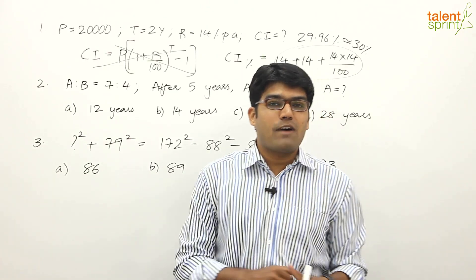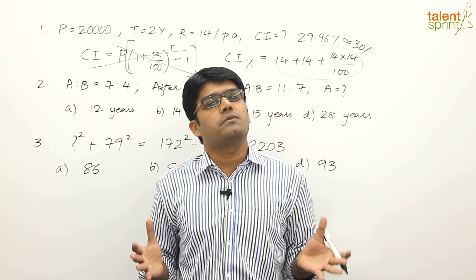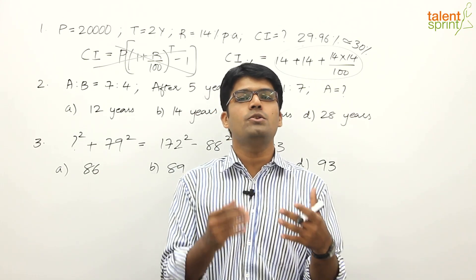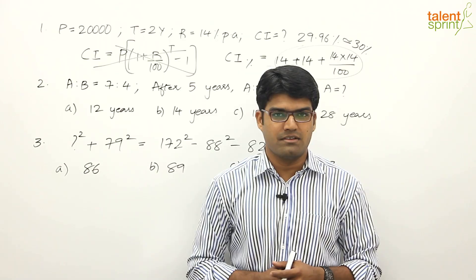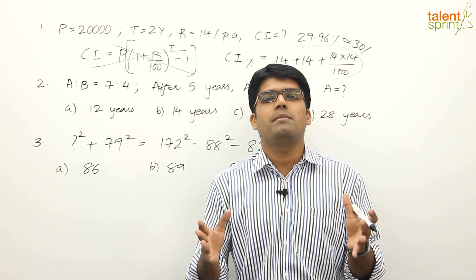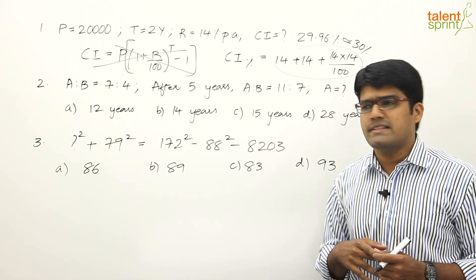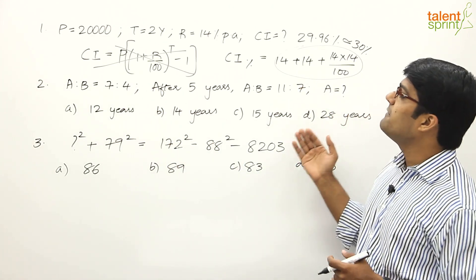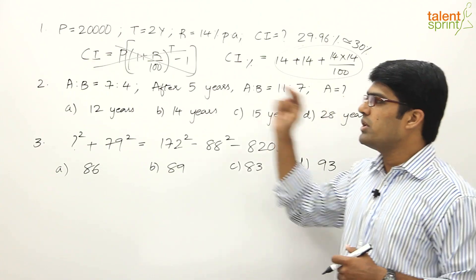The third method is the substitution method — like reverse engineering. We put the answer options back into the question and see which one satisfies the conditions. Here's an example on ages: the ages of A and B are in the ratio 7:4. After five years, the ratio of their ages becomes 11:7. What is the age of A?